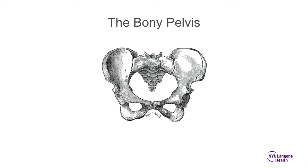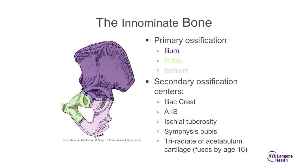Let's start with the anatomy of the bony pelvis. Here is the innominate bone seen from the side. You can see the ilium in purple, the pubis in green, and the ischium in pink. Those are the primary ossification centers. The secondary ossification centers are the iliac crest, the anterior inferior iliac spine, the ischial tuberosity, the symphysis pubis, and the triradiate of the acetabulum, which fuses by age 16 or so.